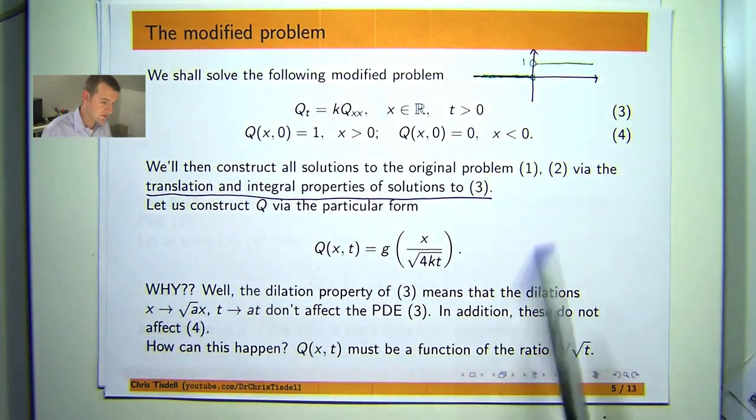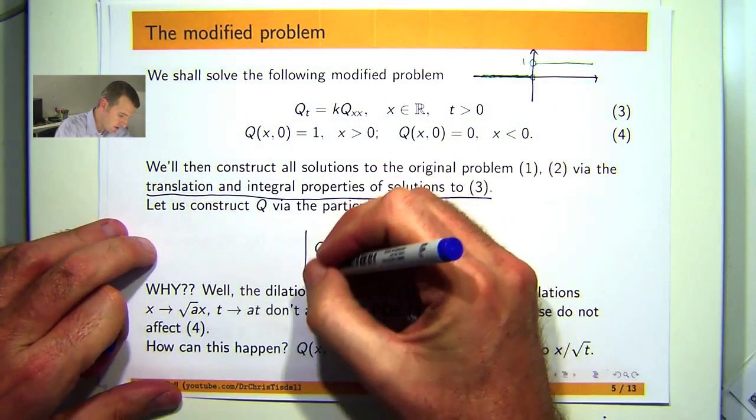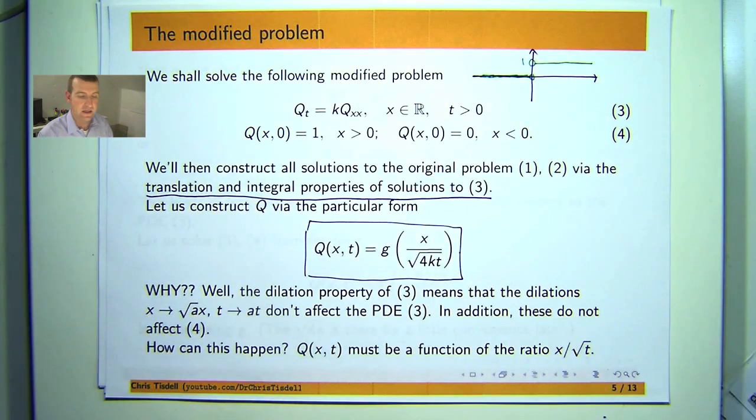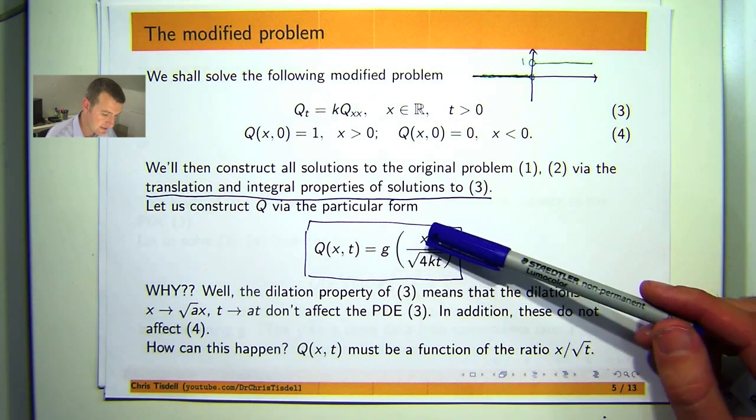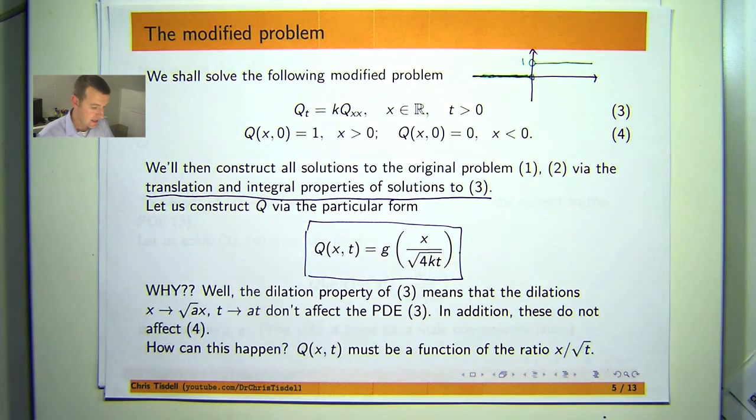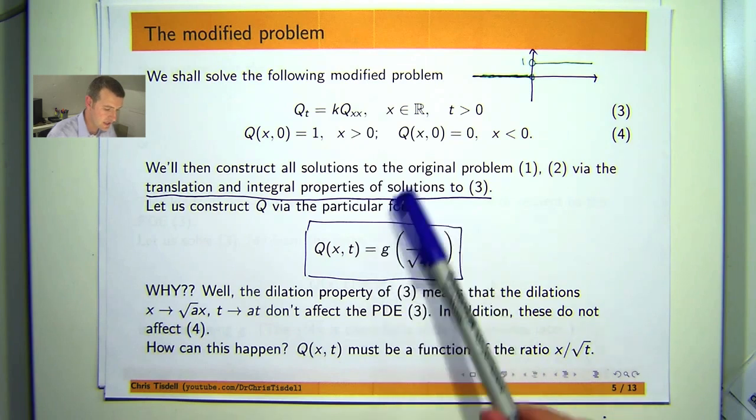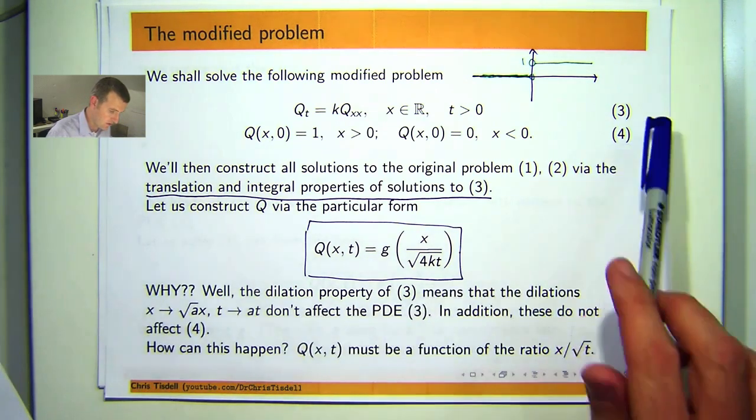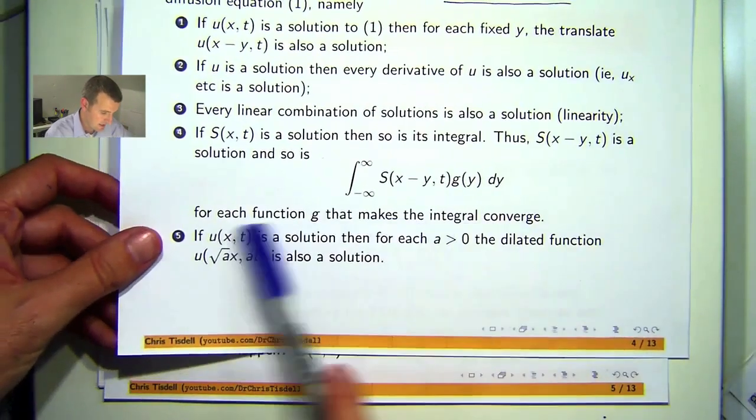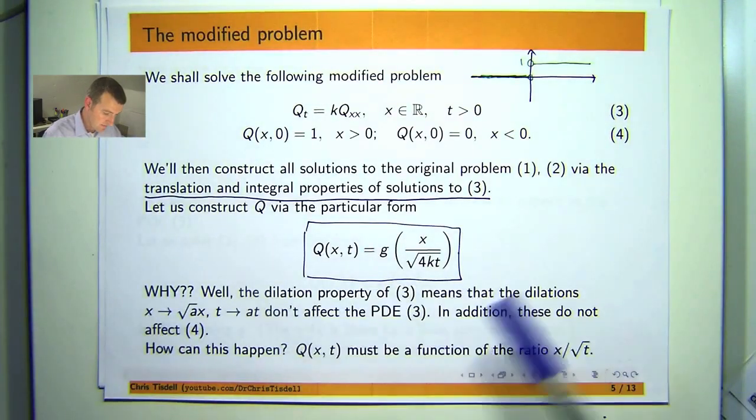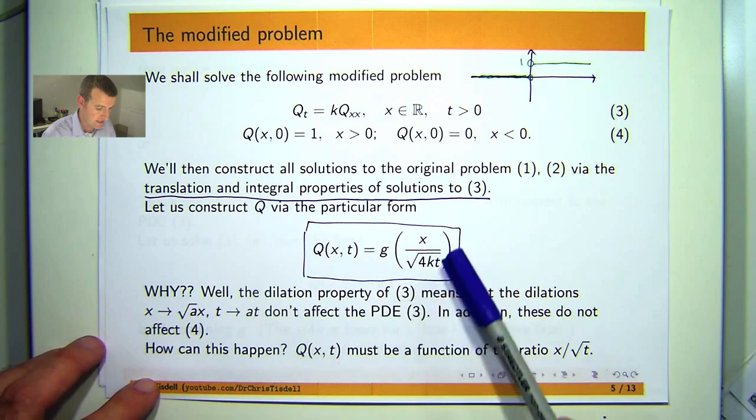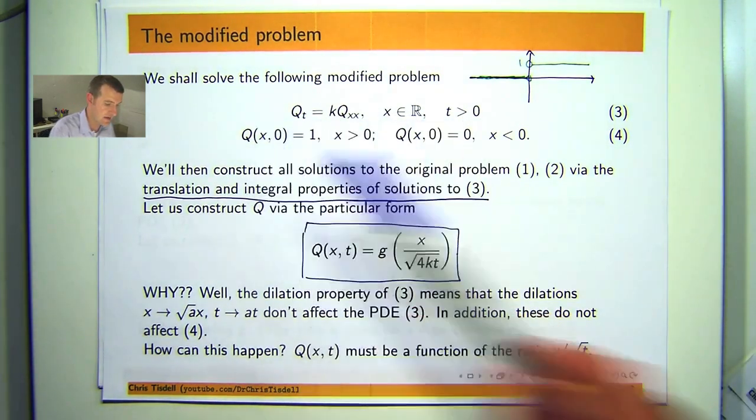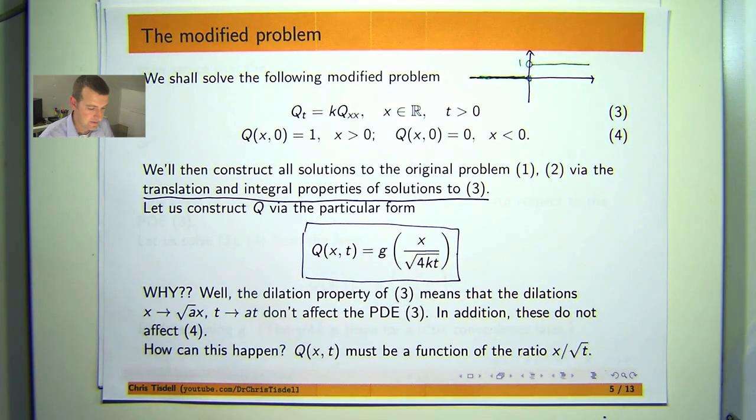So we are going to solve this problem by assuming that the solution Q is in a particular form. So it involves a function g and the argument is x on root 4kt. Now the question is why? Why can you make that assumption? Why should the solution to this problem look like this? Well, the dilation property of 3 discussed in property 5 means that the following dilations do not affect the PDE 3. And you can check also that they do not affect this Heaviside step condition. Well, how can this happen? Q must be a function of the ratio x on root t.